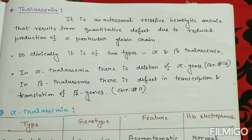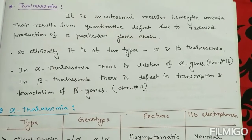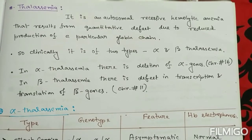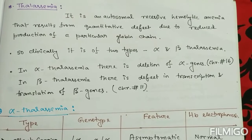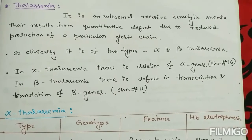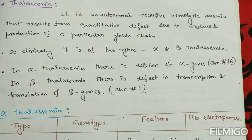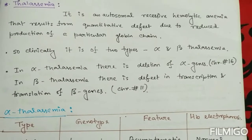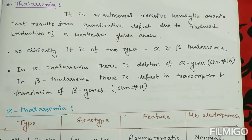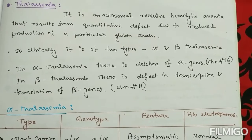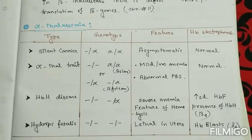The two types are alpha and beta thalassemia. In alpha thalassemia, there is a deletion of alpha genes; the alpha genes are present on chromosome 16 and have four alleles. In beta thalassemia, there is a defect in transcription and translation of the beta genes, which are present on chromosome 11 with two alleles.